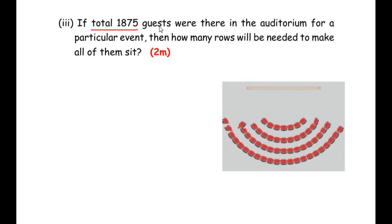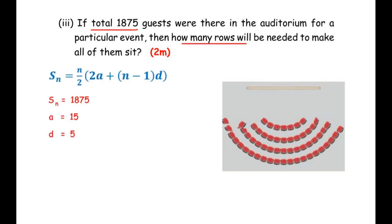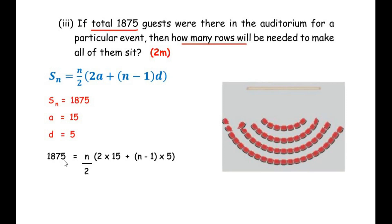If a total of 1875 guests were in the auditorium for a particular event, how many rows will be needed to make all of them sit? We need to use the sum of n terms of an AP formula because a total is given and we have to find n, the number of rows. The formula is: S_n = (n/2) × (2a + (n − 1) × d). Here S_n = 1875, a = 15, and d = 5.